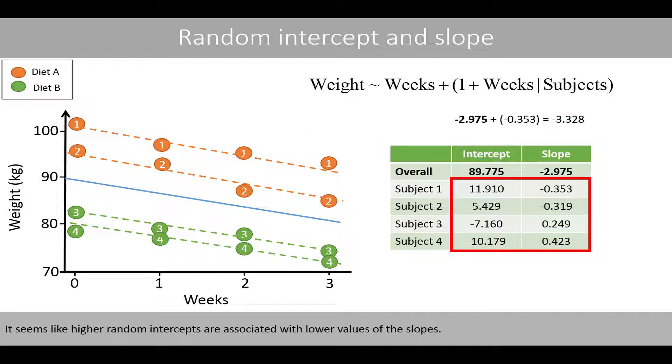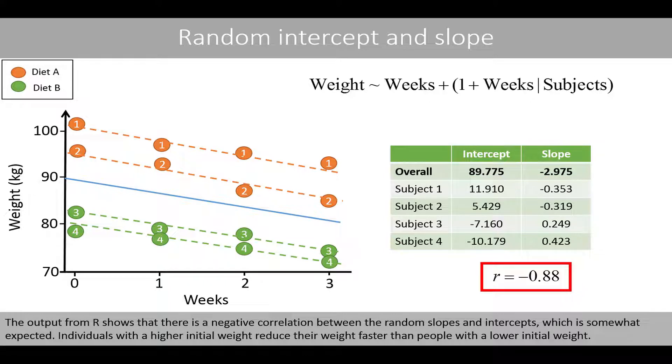It seems like higher random intercepts are associated with lower values of the slopes. The output from R shows that there is a negative correlation between the random slopes and intercepts, which is somewhat expected. Individuals with higher initial weight reduce their weight faster than people with a lower initial weight.